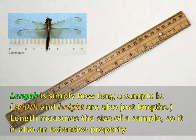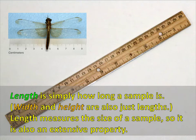The last kind of extensive property, at least of the main three, is length. Length is just a measurement of how long something is — 5 centimeters, 25 feet, whatever. Please note that width and height are also just types of length; we've just changed the orientation or how we're measuring them. Length is simply how long a sample is, it's related to size, so it is extensive.